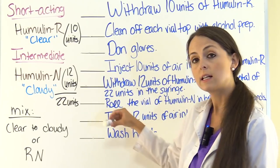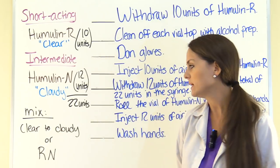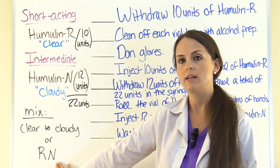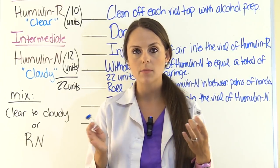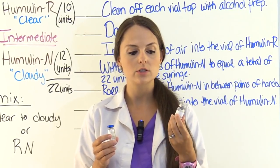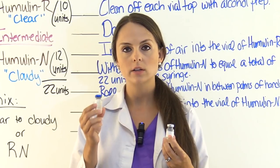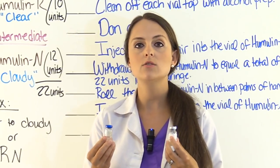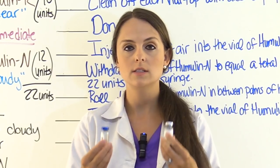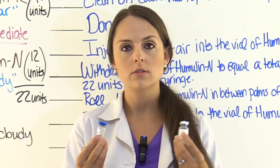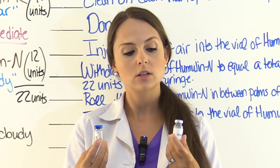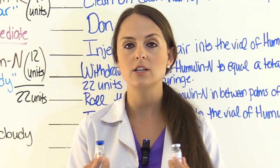So: clear to cloudy. Another popular way to remember it is RN — registered nurse. You go from the Regular first, then to the NPH, the intermediate. Why draw up clear to cloudy? Because we don't want to introduce cloudy insulin — the NPH — into our clear insulin vial. These are multi-dose vials, meaning you and other nurses will constantly be using them. If too much cloudy gets into the clear, it can change the action of how the insulins work.